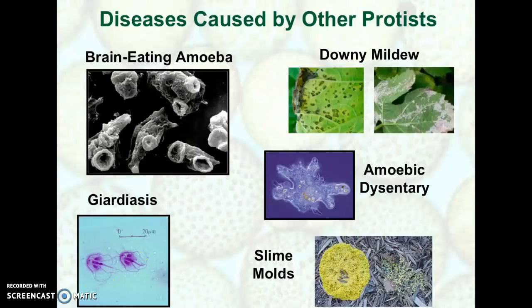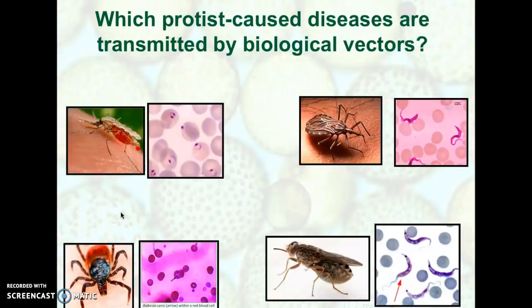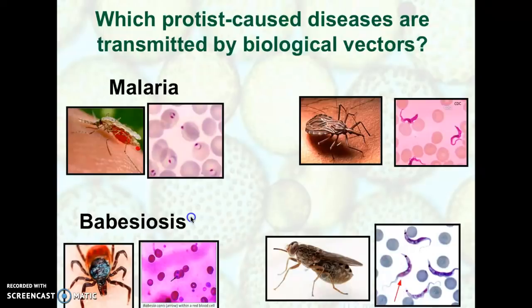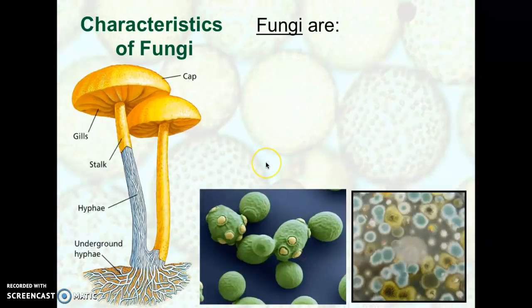Giardiasis, caused by giardia, leads to intestinal and digestive problems. To review: the diseases transmitted by biological vectors were babesiosis by tick, malaria by mosquito, Chagas disease by cone-nosed kissing bugs, and African sleeping sickness by the tsetse fly. These are some of the more prevalent protist-based diseases you're likely to hear about.